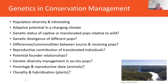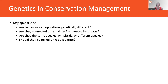Genetics can inform a suite of conservation management questions: population diversity and inbreeding, adaptive potential in a changing climate, differences or commonalities between source and receiving populations for translocations, and whether founders put into a safe haven may be related to each other. It can also manage genetic diversity in ex-situ and safe haven populations, inform reproductive skews in wildlife species, and understand clonality and hybridisation in plants. Key questions include: are two populations genetically different or connected, are they the same species, are they hybrids, and should they be managed as separate units or mixed?